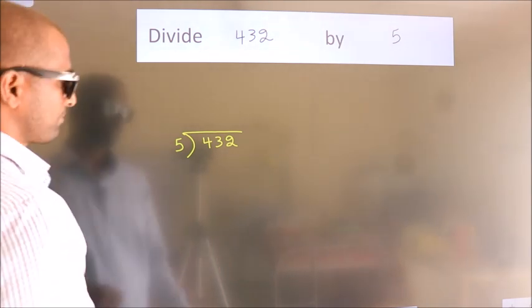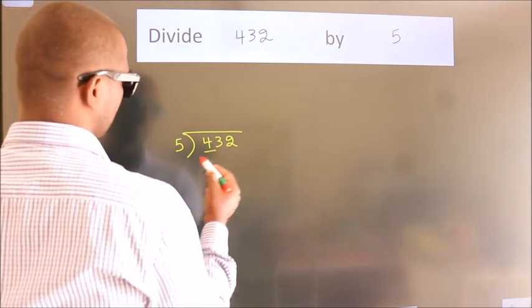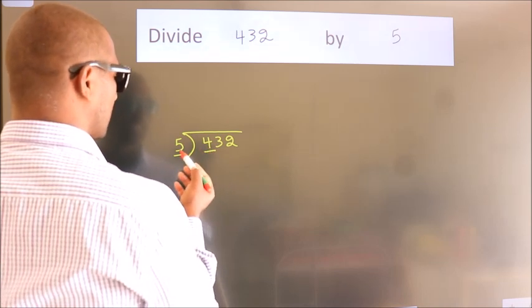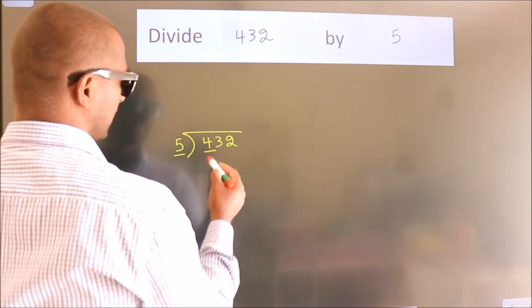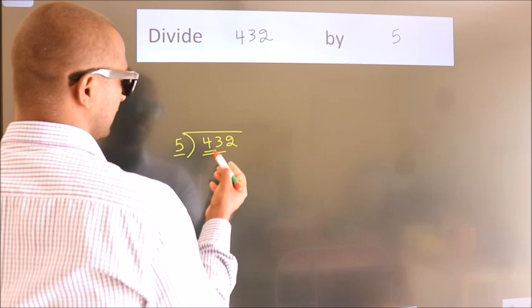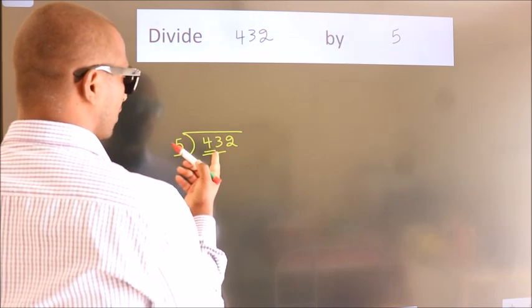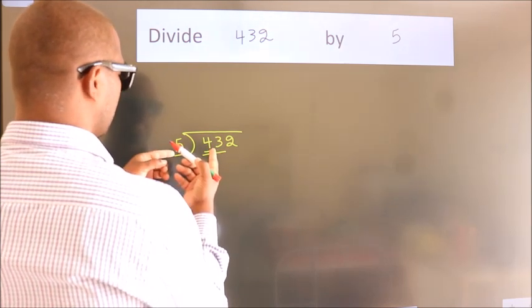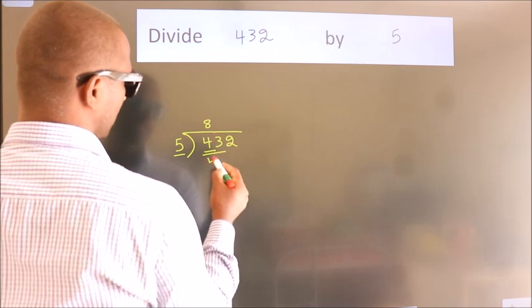Next. Here we have 4, here 5. 4 is smaller than 5, so we should take two numbers, 43. A number close to 43 in the 5 table is 5 times 8 equals 40.